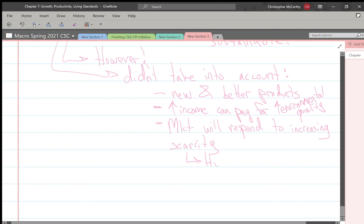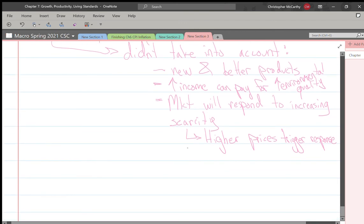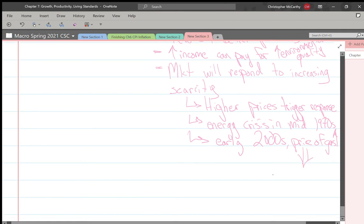What are we talking about - higher prices triggering some response? Like the strong reaction to the energy crisis in the mid-1970s, or even in the early 2000s when the price of gas went up. As a result, everybody changed away from their big SUVs - they sold their gas-guzzling SUVs.